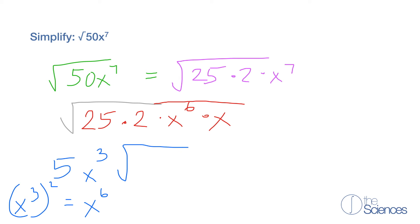So now we have 5 x cubed times 2x and that's our answer. 5 times x cubed times the square root of 2x.